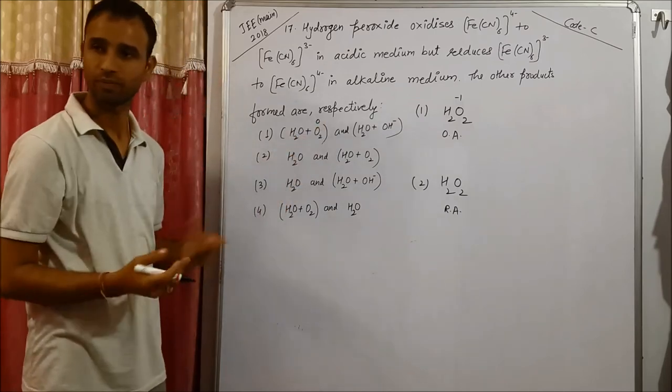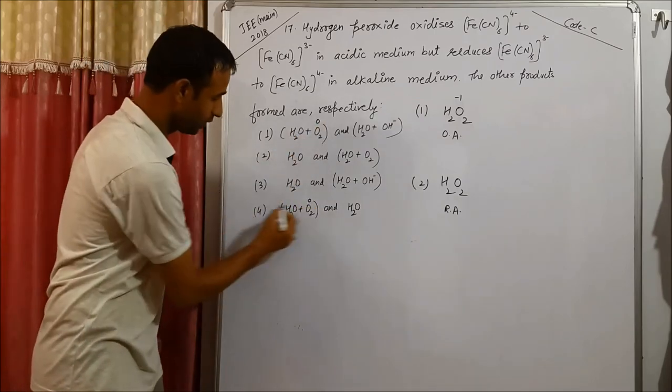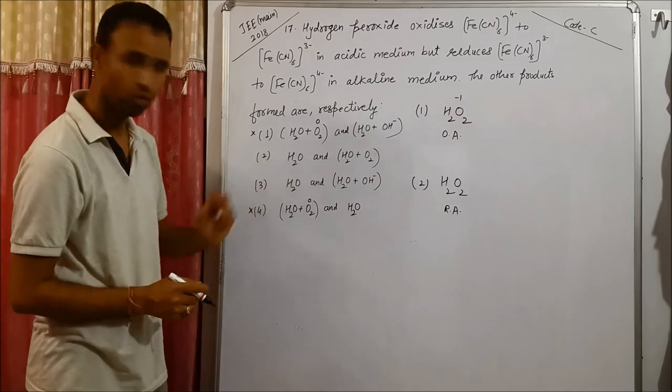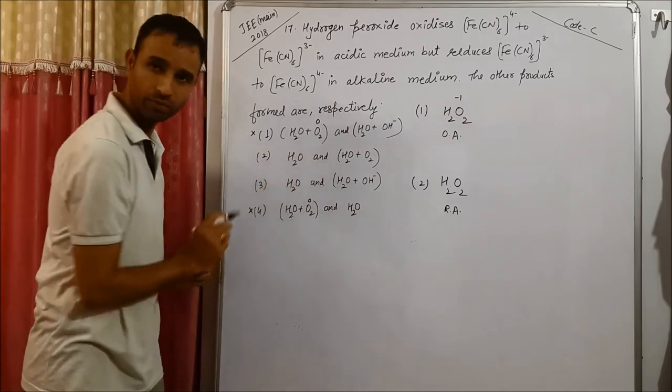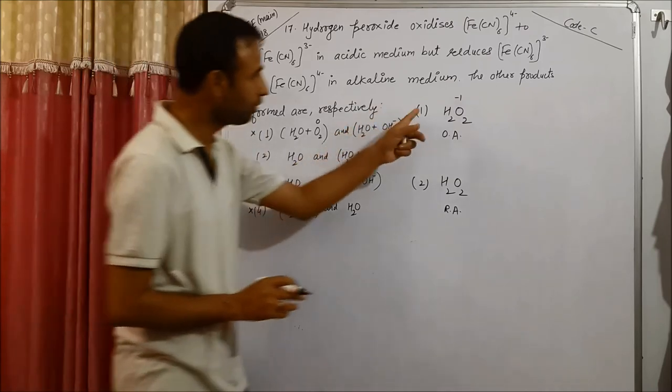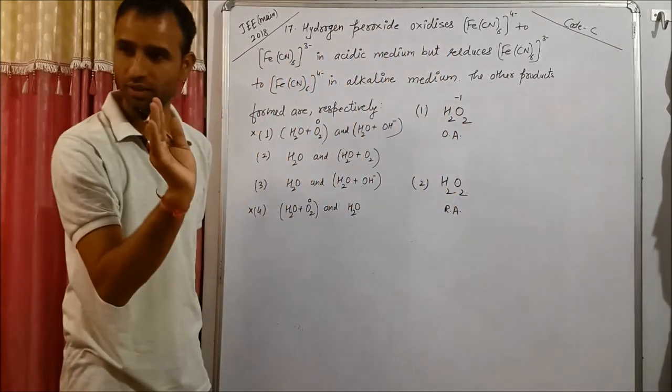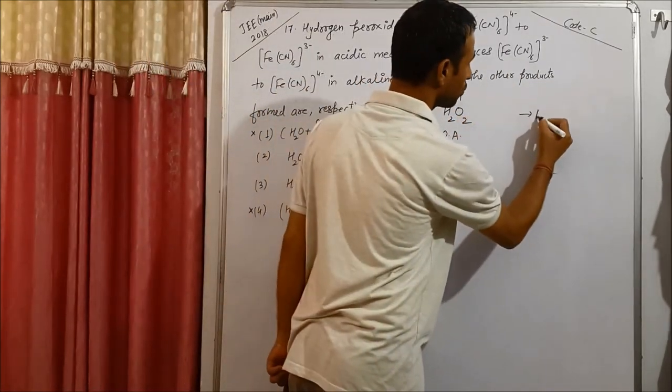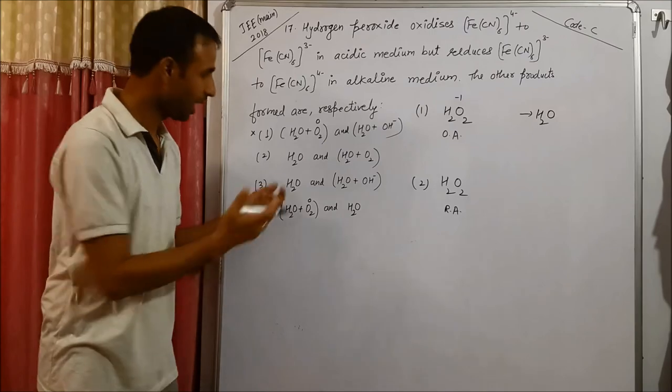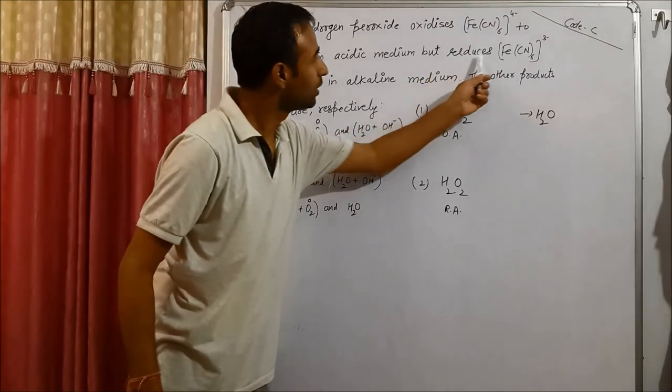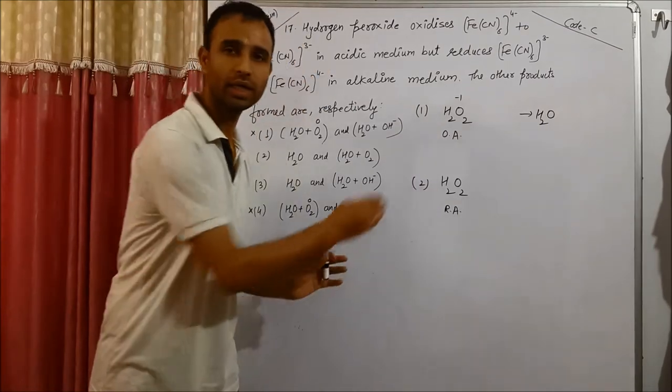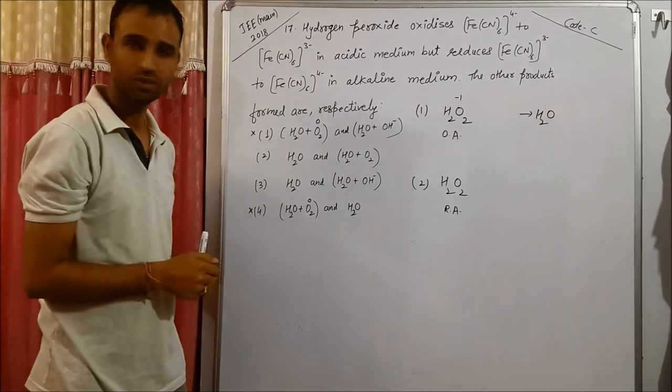Oxidizing agent means it gains electrons. If H2O2 gains electrons, then the oxidation number decreases. H2O2 with oxygen oxidation number zero is not possible. That means the fourth and first options are cancelled. We are left with second and third options. 50% of our work is done.